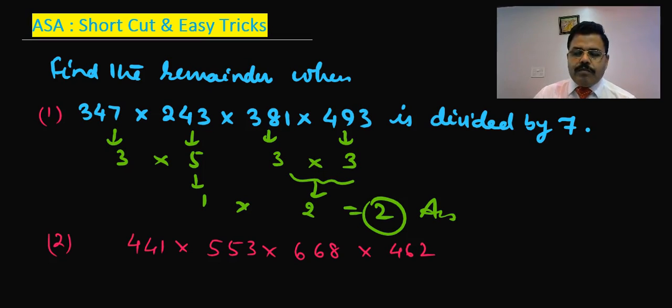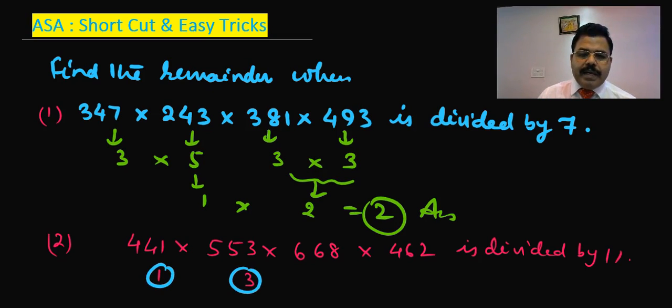Then what is the remainder? To answer this question, if you divide 441 by 11, the remainder is 0. If you divide 553 by 11, the remainder is 3. From 668, the remainder is 8. And from 462, 11 times 4 is 44, so 0 from there. So 0 multiply by all these is 0, so the remainder is 0.